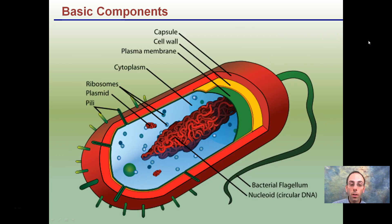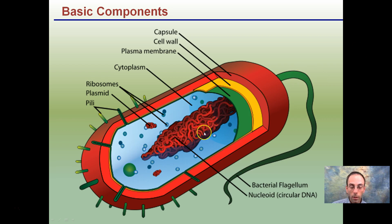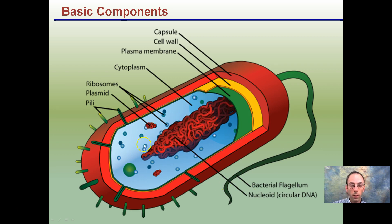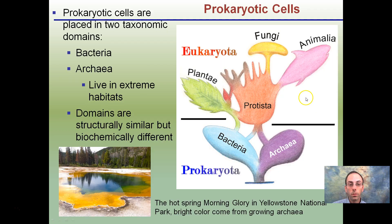Again, basic components. Looking at defining characteristics: no membrane-bound organelles, you've got the flagella, and this area that kind of looks like a bunch of noodles is the nucleoid. That's where the DNA is basically located. And there's no nucleus in prokaryotes — very simple.